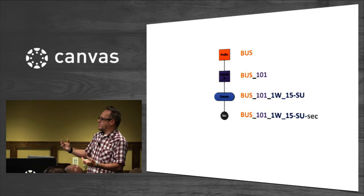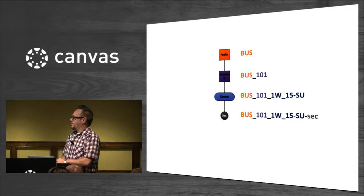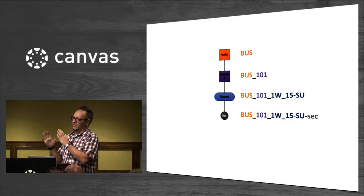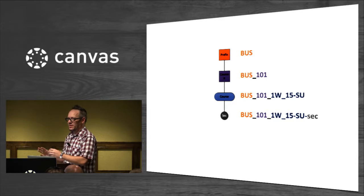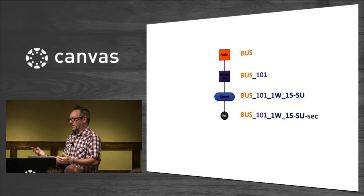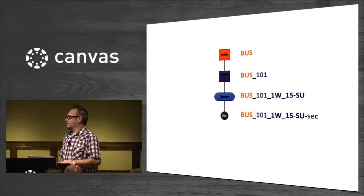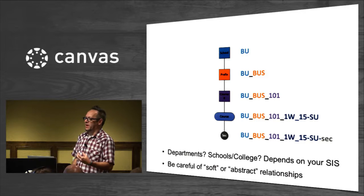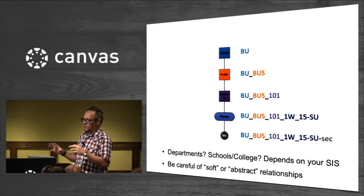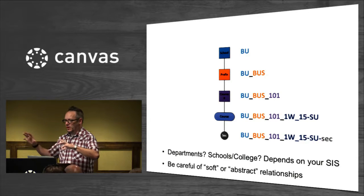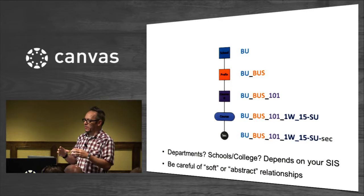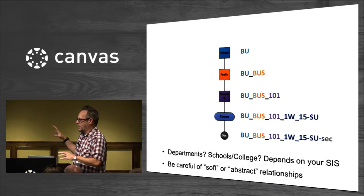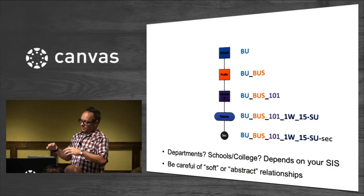Logically, the next level up is the prefix — so all business courses together. At Maryville our programs tend to have a fairly homogenous prefix, though we do have an MBA with several different prefixes involved in that program. That's something to be careful of — soft or more abstract relationships like programs where courses share prefixes across schools. You want to stick as close as possible to what the course record in your SIS says. Use that information and try to keep those more abstract relationships handled a different way.